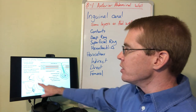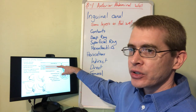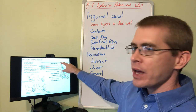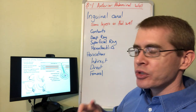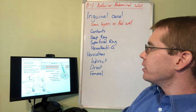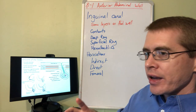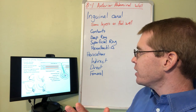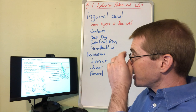The testes develop between the peritoneum and the transversalis fascia, getting drawn down. Part of that peritoneum gets drawn down with the testicles and forms a sac around them. This sac is formed from two different layers of the peritoneum, called the tunica vaginalis — parietal and visceral layers.